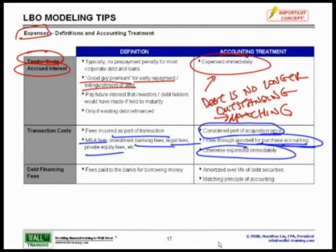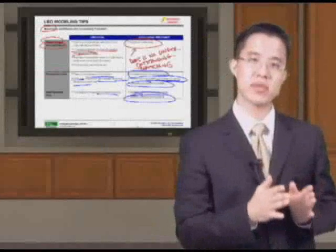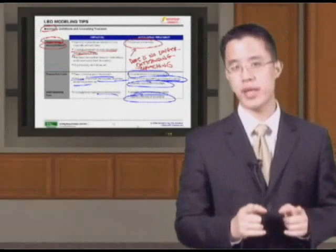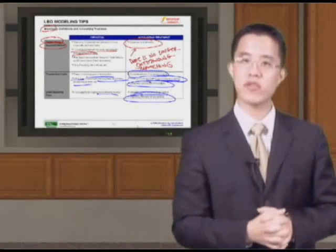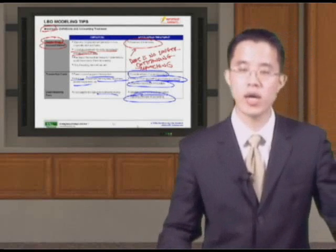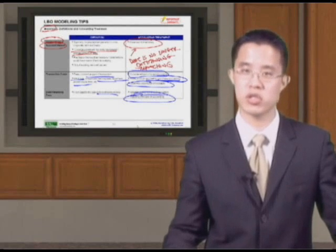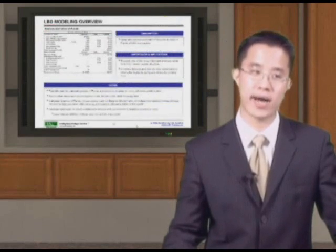Debt financing fees are fees paid to the banks for borrowing money — they will always charge you to borrow. This is amortized over the life of the debt securities, due to the matching principle of accounting. This has been a basic overview of the three major types of expenses and their accounting treatment. When we go into our complex leveraged buyout modeling course, we will go into much more detail on how this affects the income statement, the balance sheet, as well as the sources and uses, and the entire leveraged buyout model.